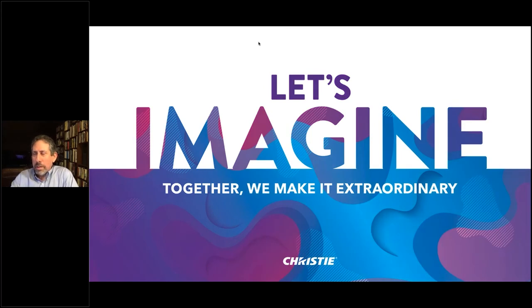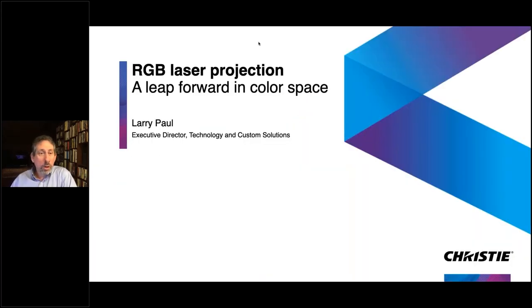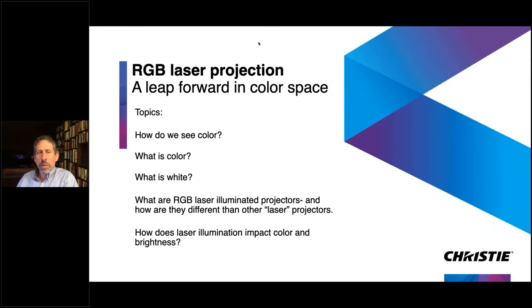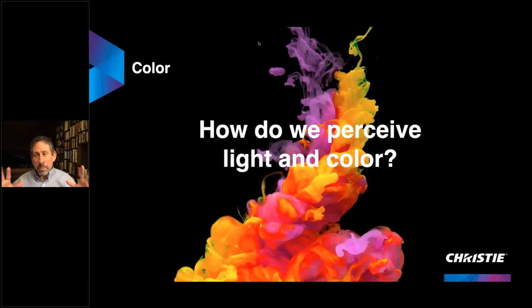Welcome everyone. We're focusing on color space and RGB laser projections, specifically trying to give a good background covering a variety of topics: how do we see color, what is color, what is white, and how RGB illumination projectors are really different. The word laser has been an overused term, so I want to clarify that and explain how illumination affects color and brightness.